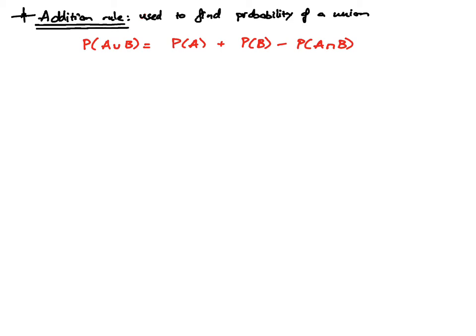You may be wondering why we are subtracting the probability of the intersection out of the equation. The reason we subtract this term is because we would like to avoid double counting.